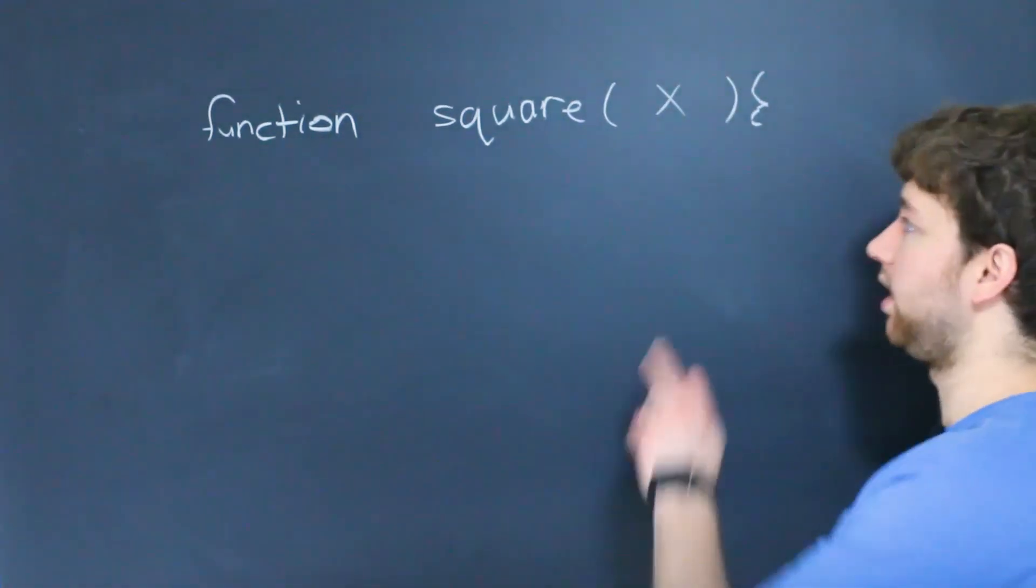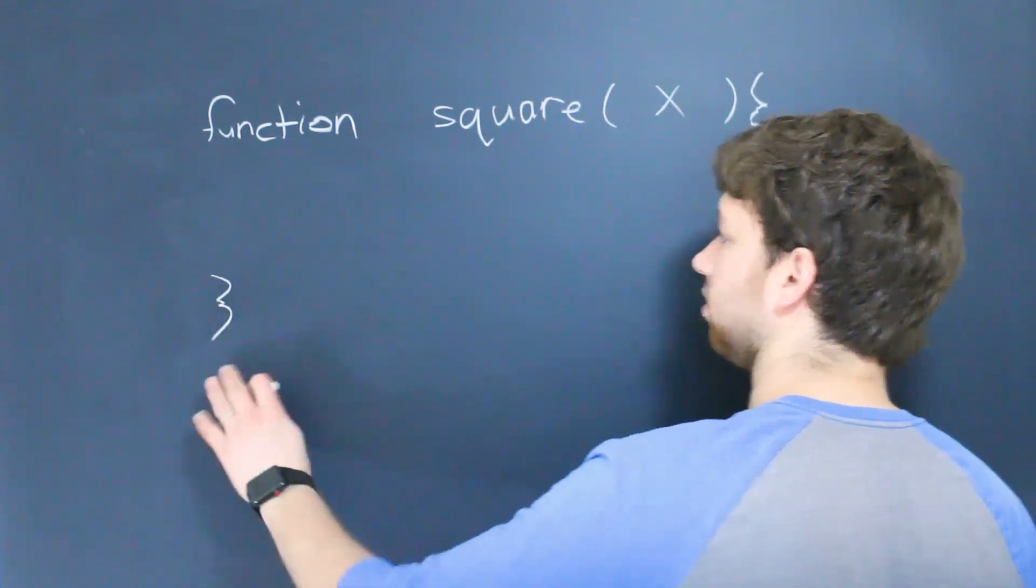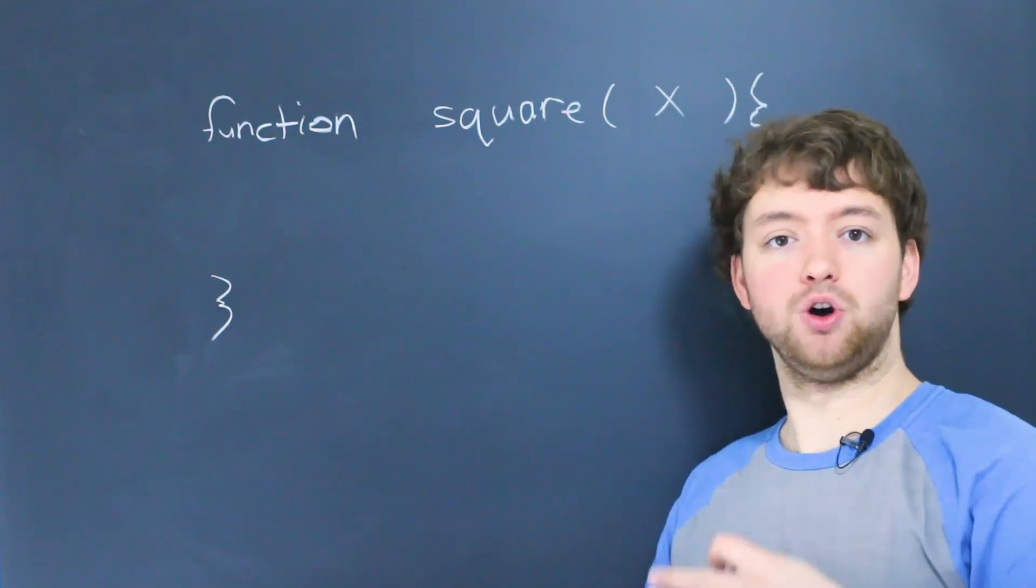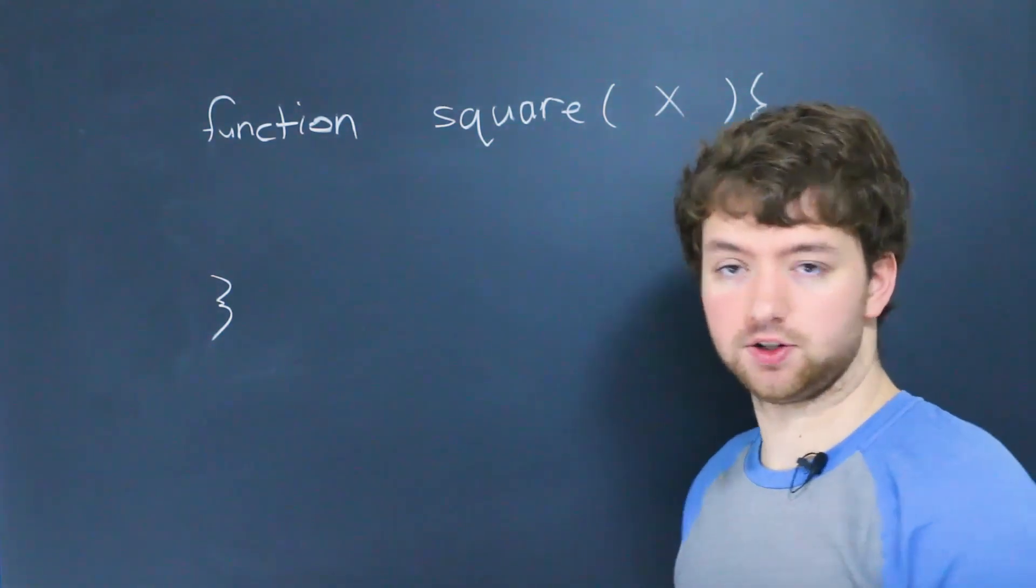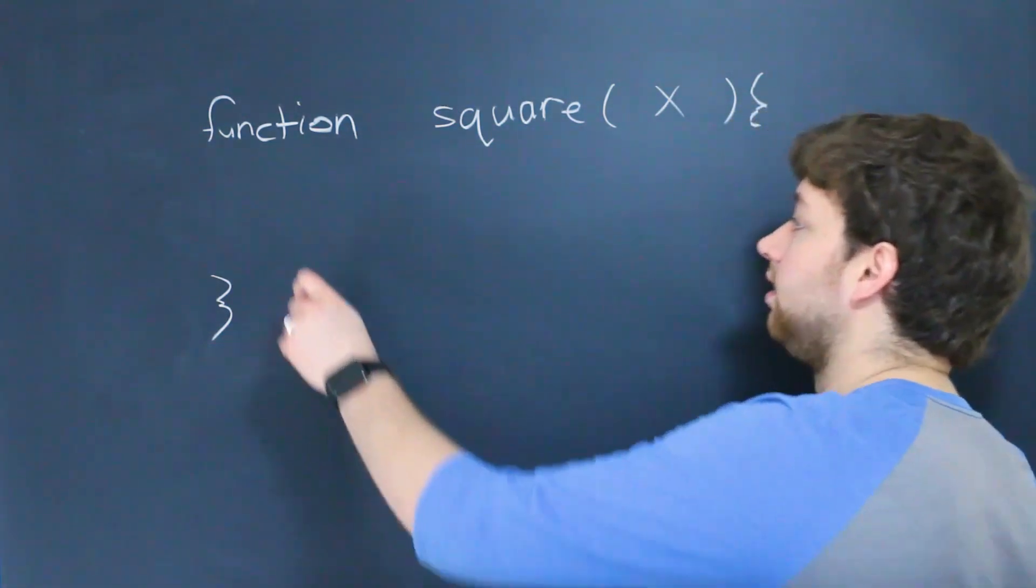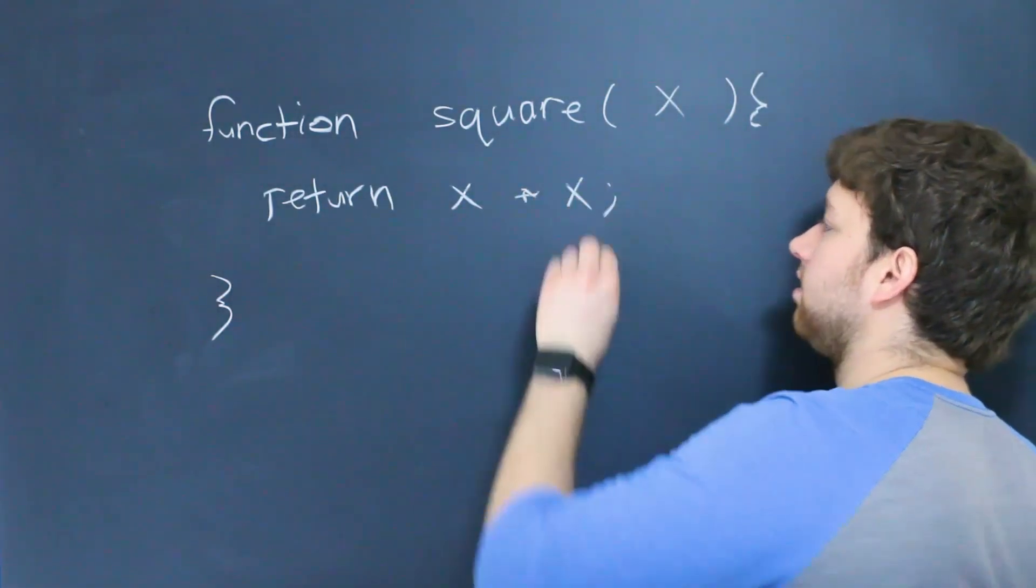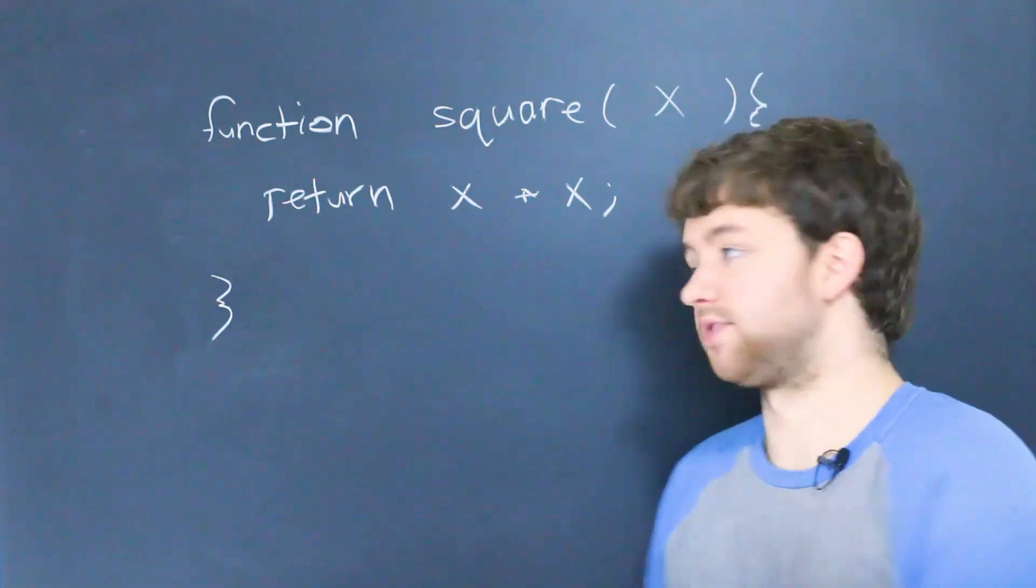So we have an open curly brace, and then we have a closed curly brace. And then inside of the curly braces is where we put the code that belongs to this function. So this is the function body. So what we can do is we could say return x multiplied by x. So what that will do is it will take a number such as 5.